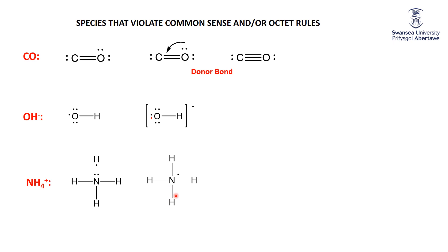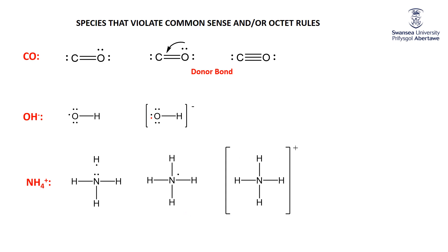Cast your mind back to sodium — is a sodium atom happy? No. What does it do to get happy? It loses an electron. Is NH₄ happy? No. What does it do to get happy? It loses that electron. Don't worry about where it goes — NH₄⁺ gets happy by losing an electron.